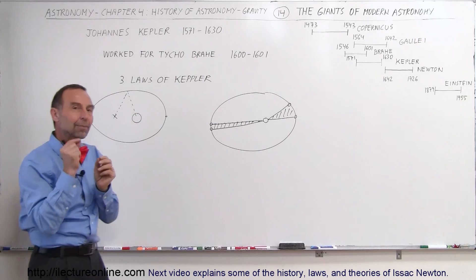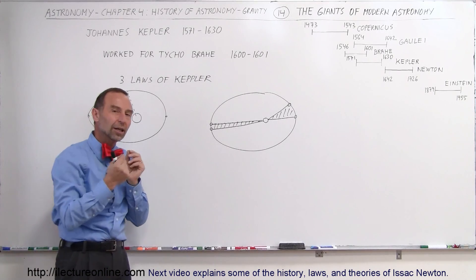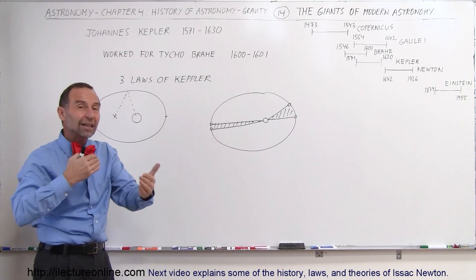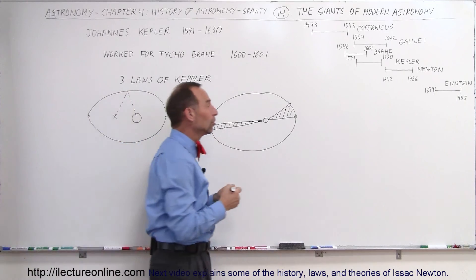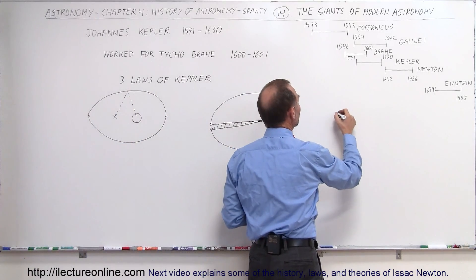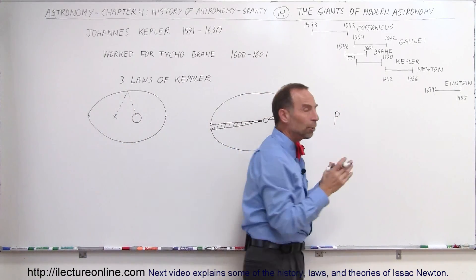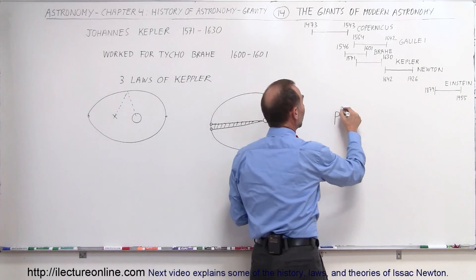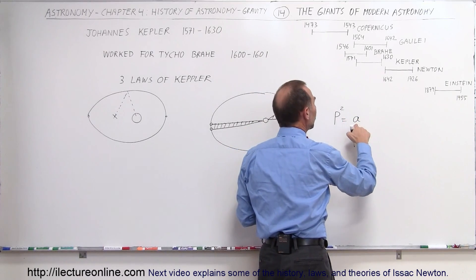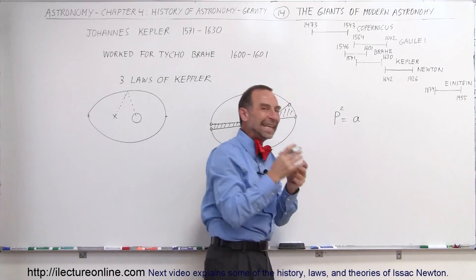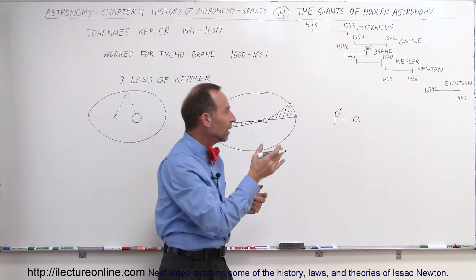And thirdly, he began to realize that the time that a planet spent orbiting the Sun depended upon the distance, and he found that relationship between them. So the third law said that the period of the orbit, squared,